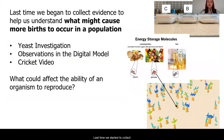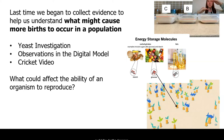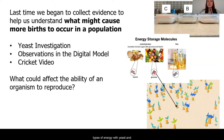Last time we started to collect some evidence to help us understand what might be causing more births to occur in a population. We know that in the moon jelly population there are more births than deaths happening, but we still don't fully understand what is causing that change. Did the births increase, or did the deaths decrease? Right now we are focusing on births and how they change in a population. In our previous lesson, we did an investigation with different types of energy with yeast and saw that when more energy was available, the yeast seemed to grow more.